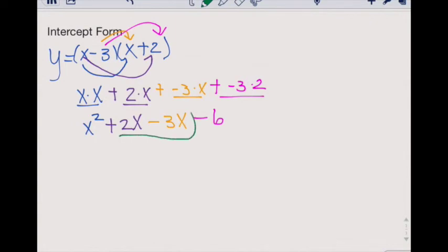Notice we have two like terms in this area. They both share an x, so we're going to combine them. Our final form will then look like x squared minus x minus 6.